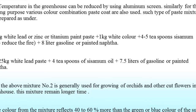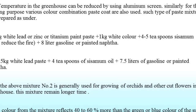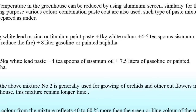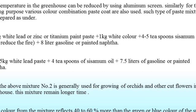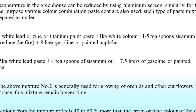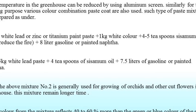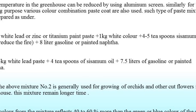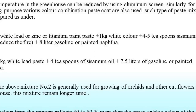The second example composition is: 2.25 kg white lead paste, plus 4 teaspoons of white oil, plus 7.5 liters of gasoline or painted naphtha. The second composition is generally used for growing orchids and other cut flowers in the greenhouse, and these mixture compositions remain effective for a longer time. White color from the mixtures reflects 40 to 60 percent more than green or blue colors, helping to reduce light intensity and ultimately temperature inside the polyhouse.